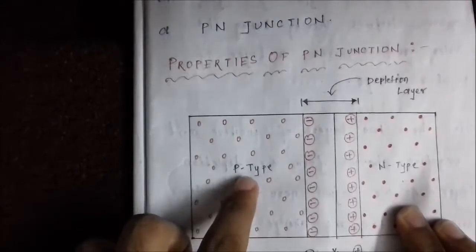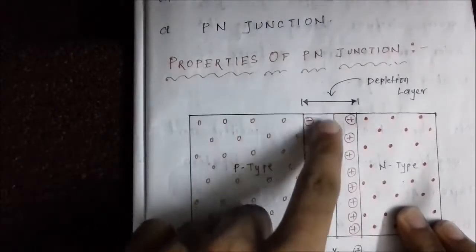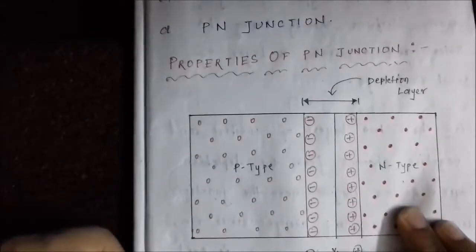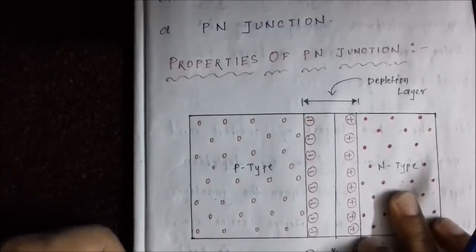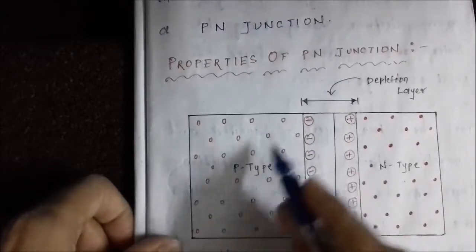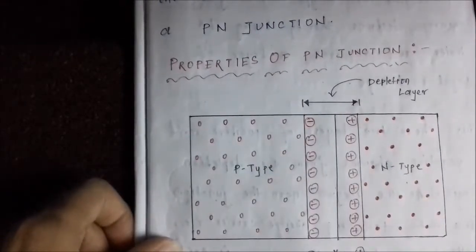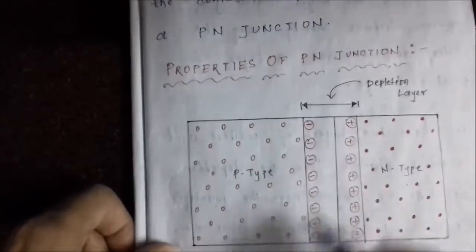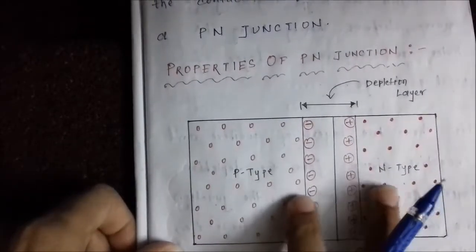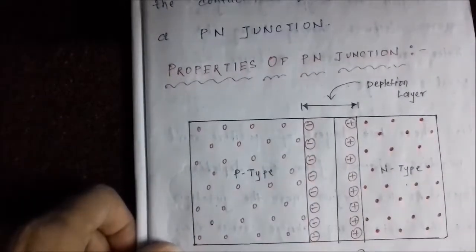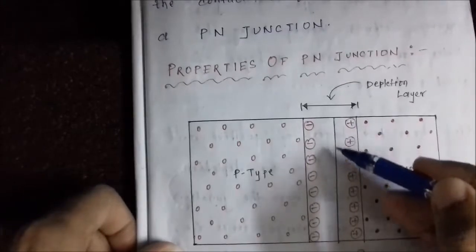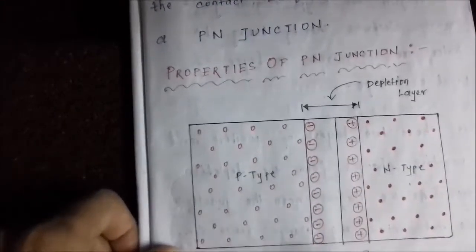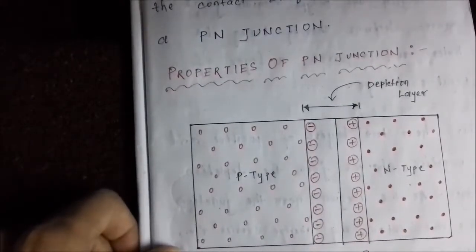Here we have a figure of a PN junction. This is the P type material at one end, this is the boundary of the P type material, and this one is the N type material. The figure is a bit asymmetric but both are more or less symmetric in reality. These two materials are suitably joined together, and this junction that is formed is called a PN junction device.